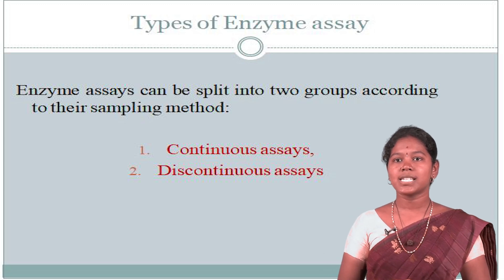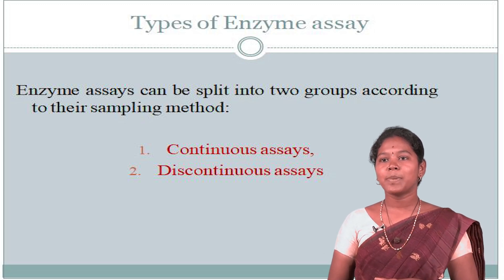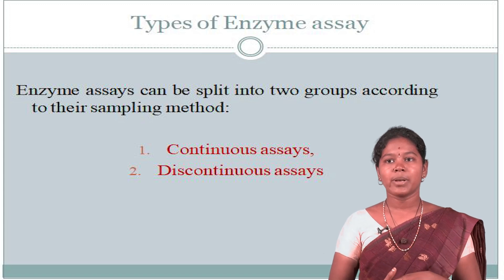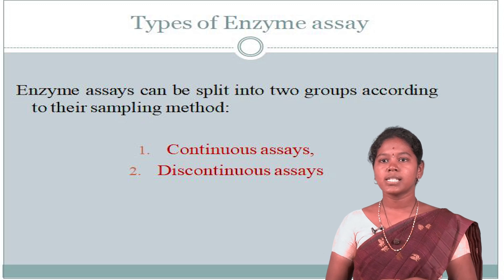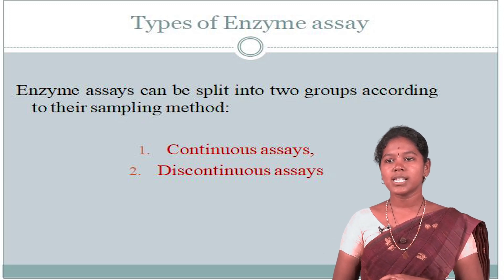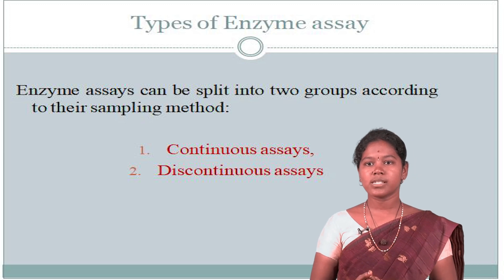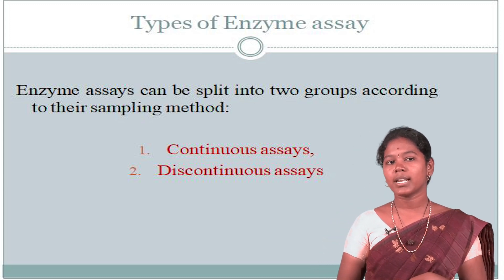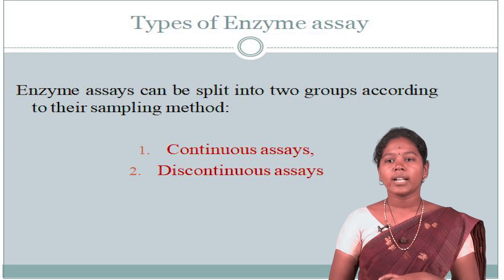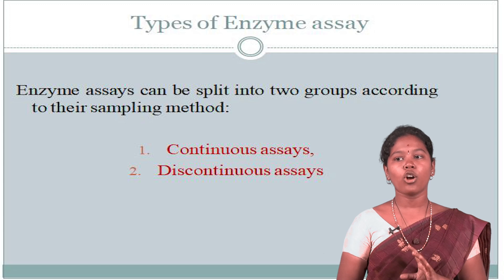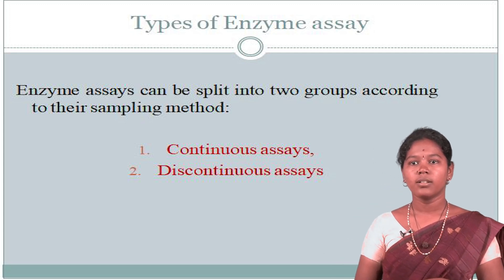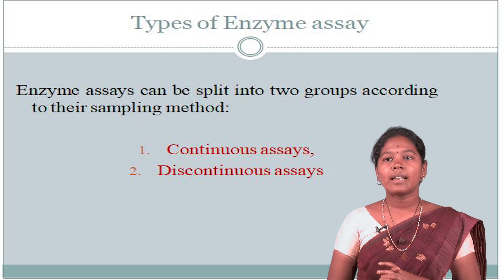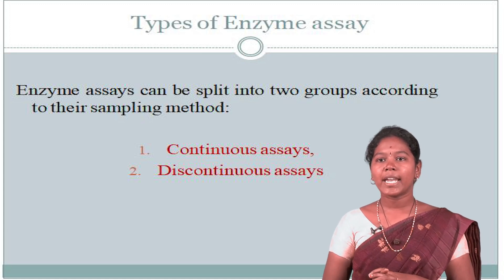Next, the types of enzyme assay. Enzyme assays can be split into two groups according to their sampling methods: first, continuous assay, and second, discontinuous assay. Continuous assays give a continuous reading for activity — multiple measurements, usually of absorbance change, are made during the reaction either at specific time intervals or continuously by a continuous-recording spectrophotometer. These assays have advantages over fixed-time methods because the linearity of the reaction may be more adequately verified.